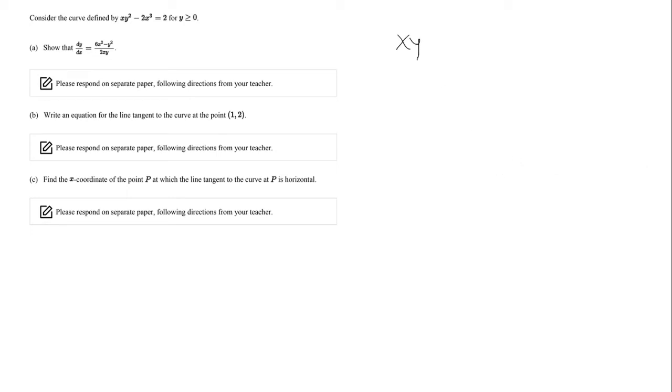We're given xy² - 2x³ = 2 for y ≥ 0. For part a, we want to show that the derivative is equal to that. So in order to find the derivative, we have to apply the product rule for xy².